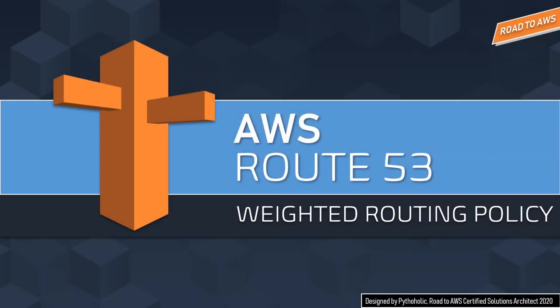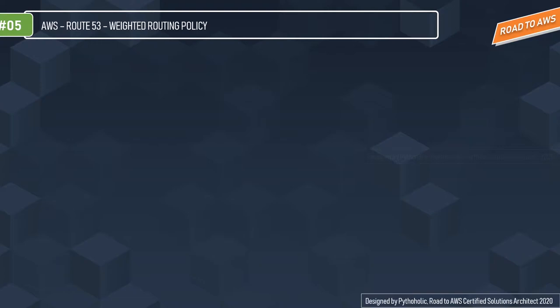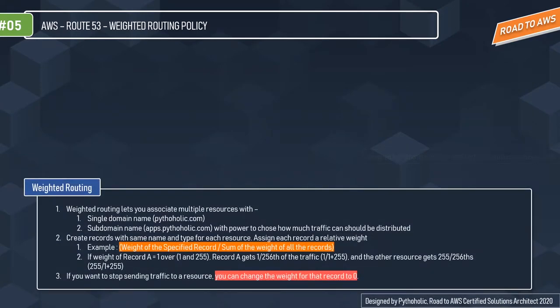As the name suggests, weightage is associated with priority based on the percentage provided to a given entity, and you distribute your data based on what percentage is associated with the receiver. Weighted routing lets you associate multiple resources — either a single domain name or a subdomain name — and choose how much traffic should be distributed.